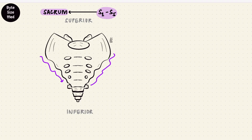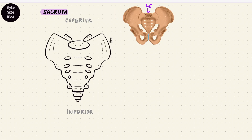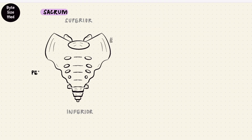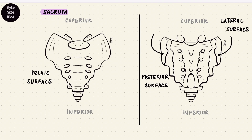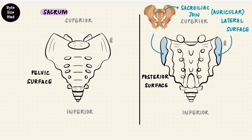Since the sacrum is formed by the fusion of vertebrae, we can see their residue in the different parts. These vertebrae get smaller and smaller because the lower ones are not bearing weight — the weight gets transferred to the pelvic girdle. The sacrum forms the posterior part of the pelvic cavity, making its anterior surface the pelvic surface since it faces the inside of the pelvic cavity. It also has a posterior surface and two lateral surfaces. The lateral surfaces are articular surfaces that look like ears, so they're called auricular surfaces. Each one articulates with the ilium, forming the sacroiliac joints.